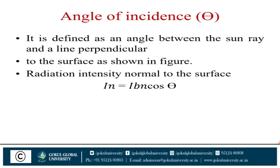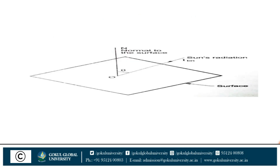Angle of incidence — most important definition for the GTU exam. It is defined as the angle between the sun rays and the line perpendicular to the surface, as shown in the figure. The radiation intensity normal to the surface is: I_n = I_b × cos(φ), where φ is the angle of incidence and I_bn is the beam radiation normal to the surface.